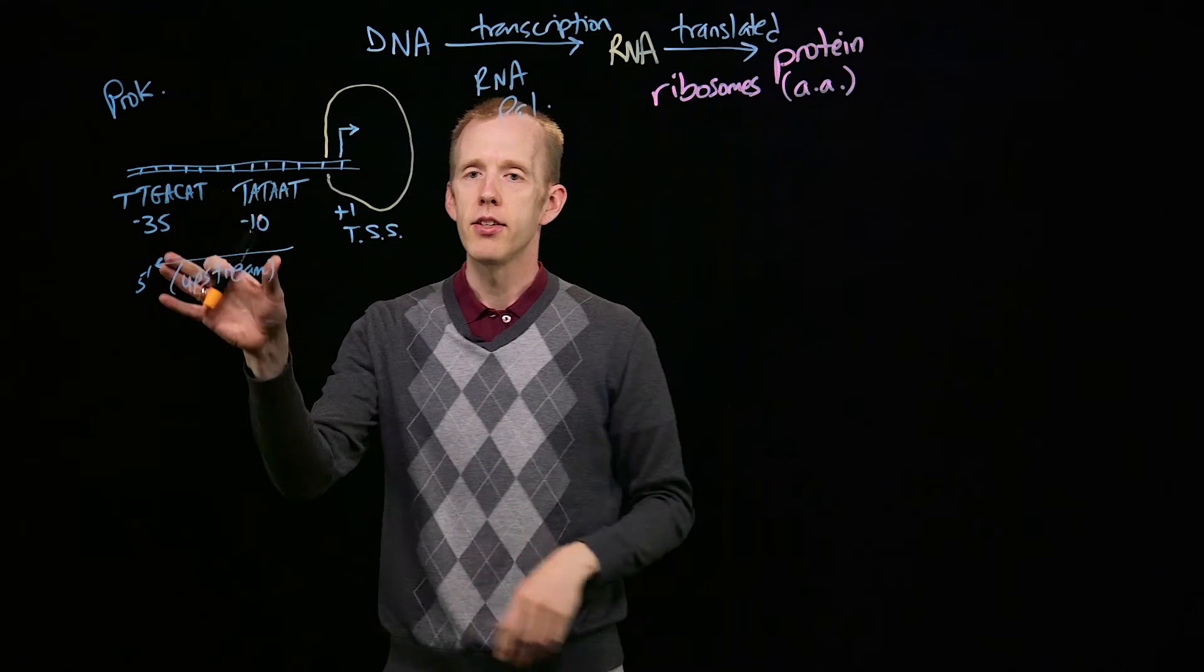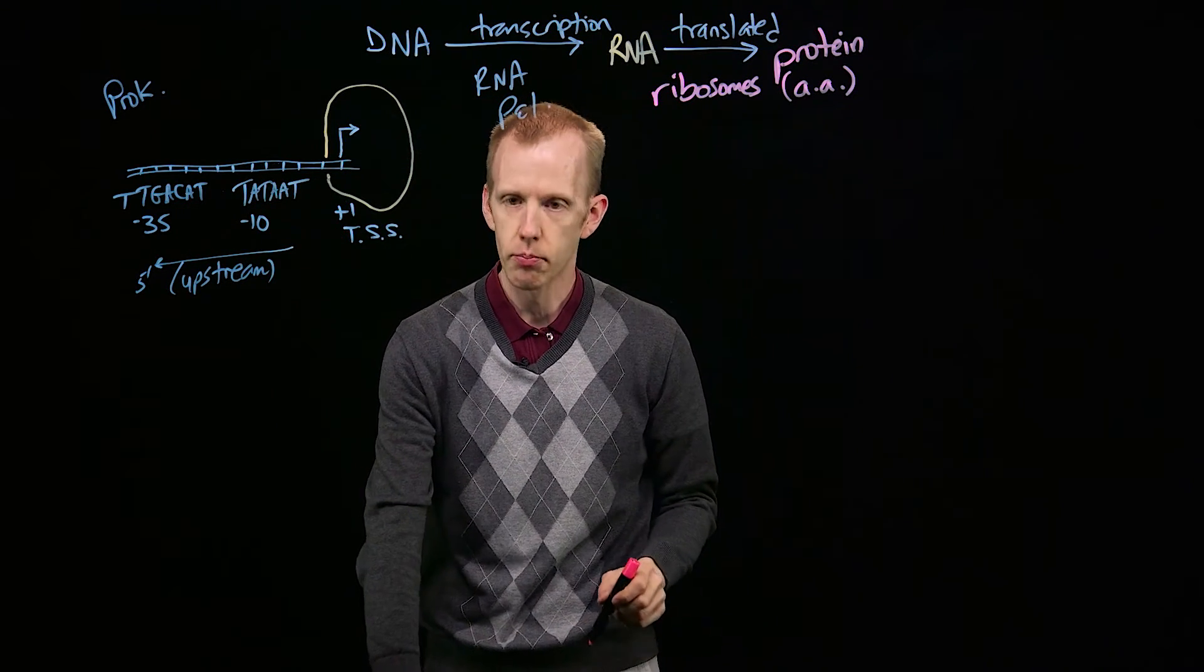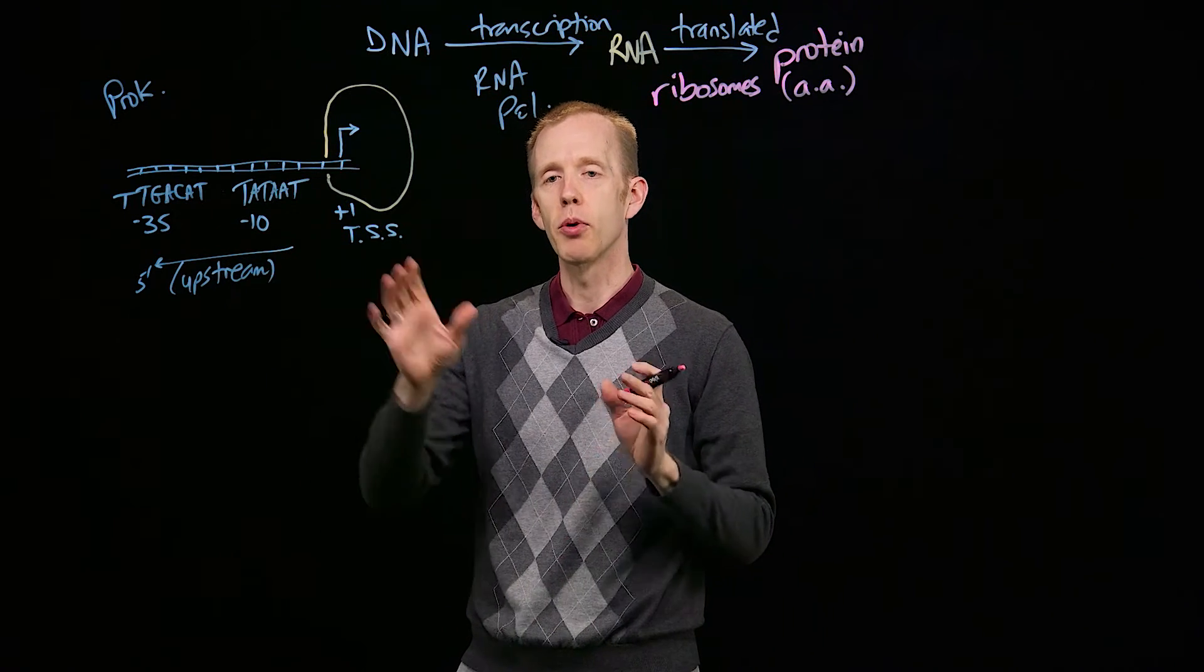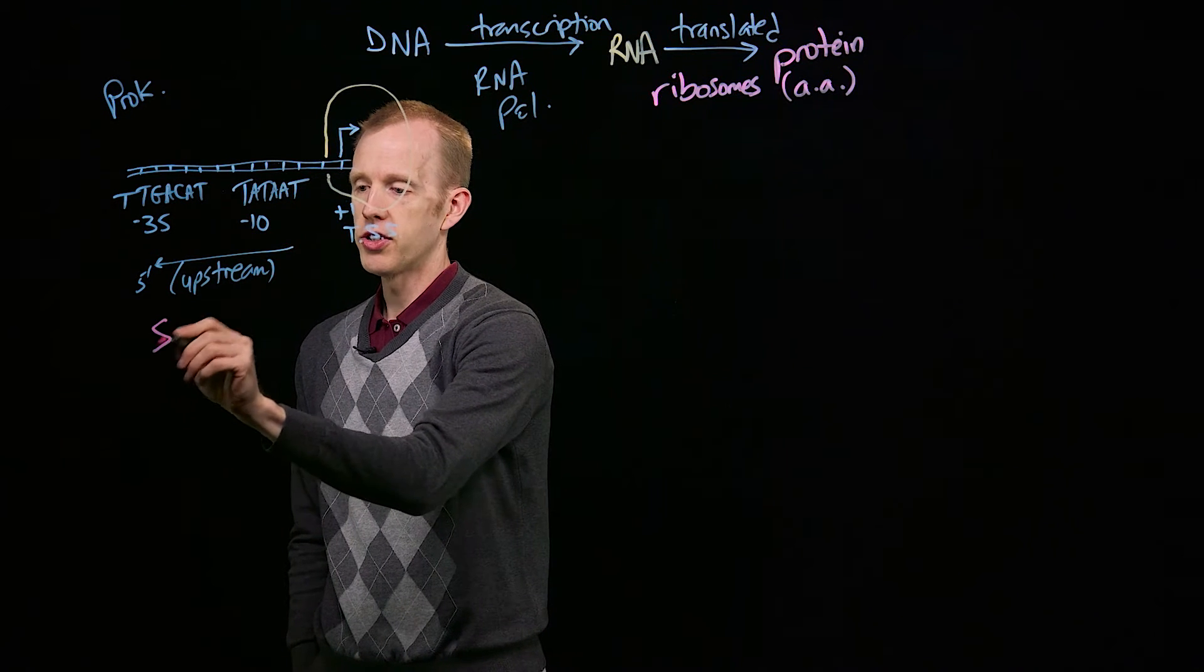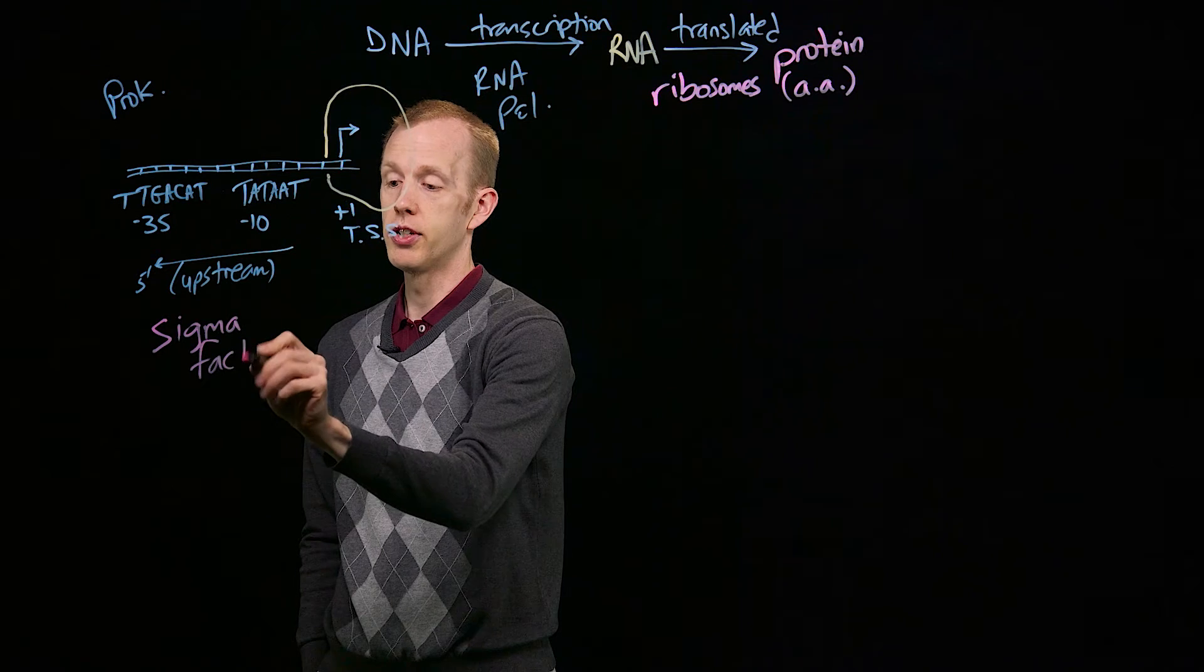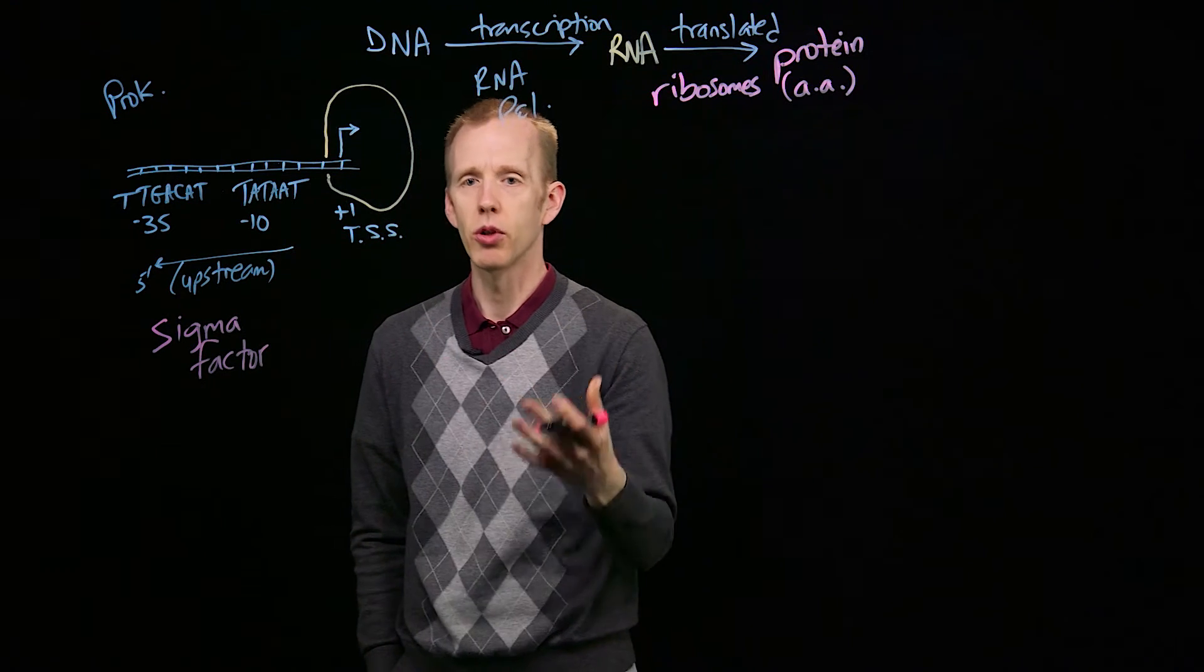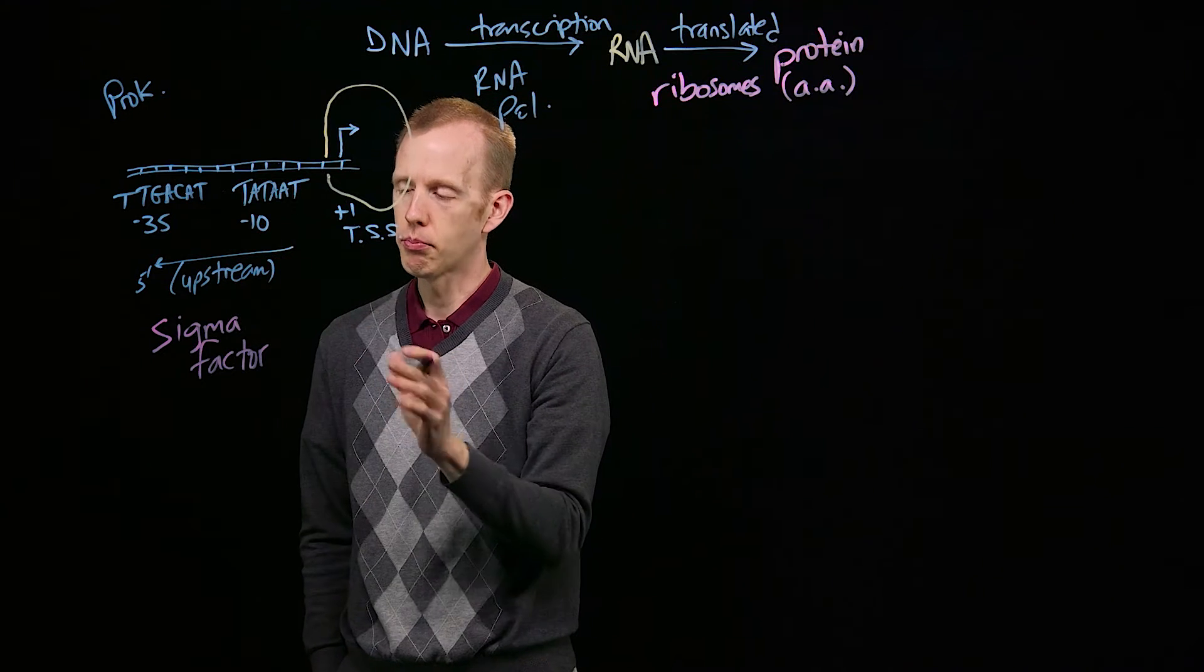The reason that these sequences are important is because they're going to be the binding sites for a particular type of protein in prokaryotes called sigma factors. And there are a large number of sigma factors, different proteins, they're all similar to each other, but they all have slightly different binding preferences.